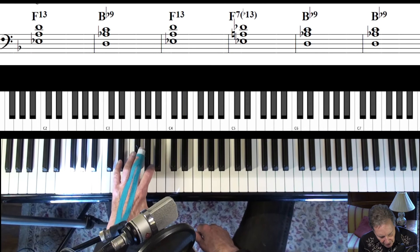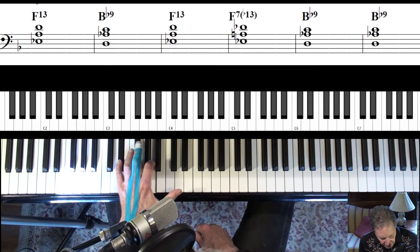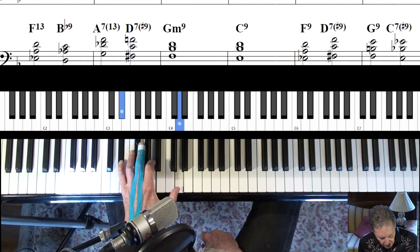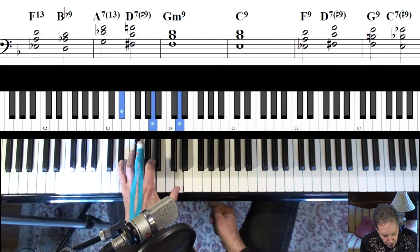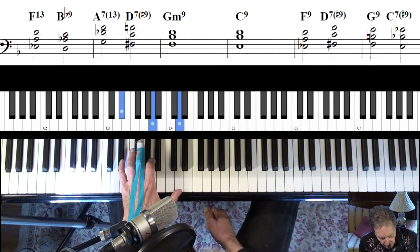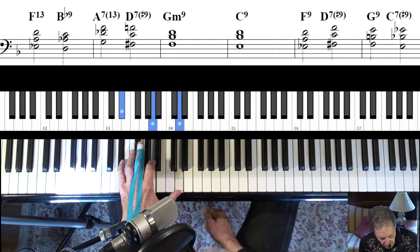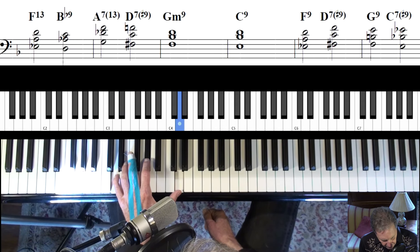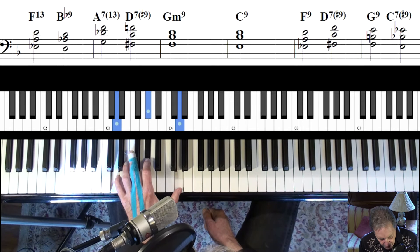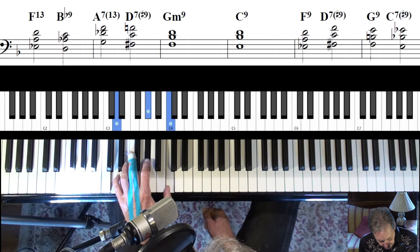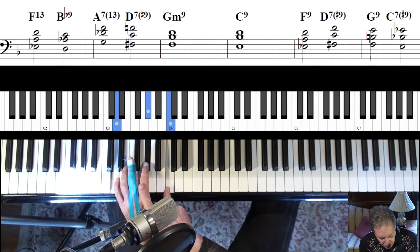We're starting with position one, and that's the one that has the tritone here and the perfect fourth up here. A real common move is to move the tritone down a half step and move this down a whole step. That gives you position two.